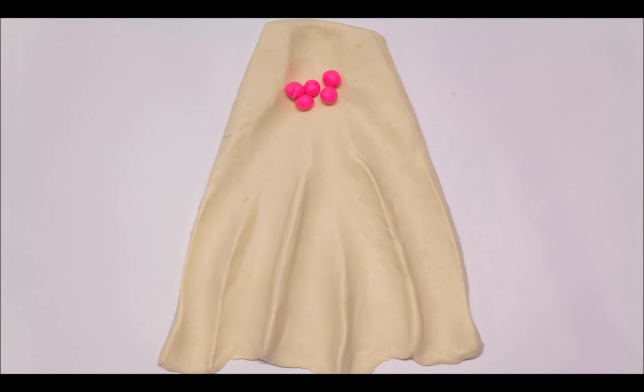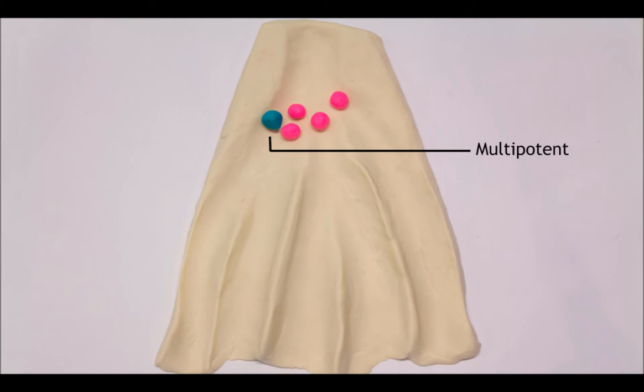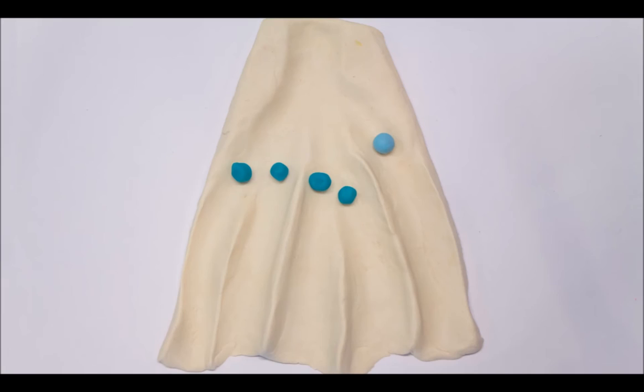The cells then start to choose different paths and start to differentiate into tissue-specific cells, like progenitor cells for all different kinds of blood cells. In this stage, the cells are called multipotent. As you can see, they are racing together to their one and final state.